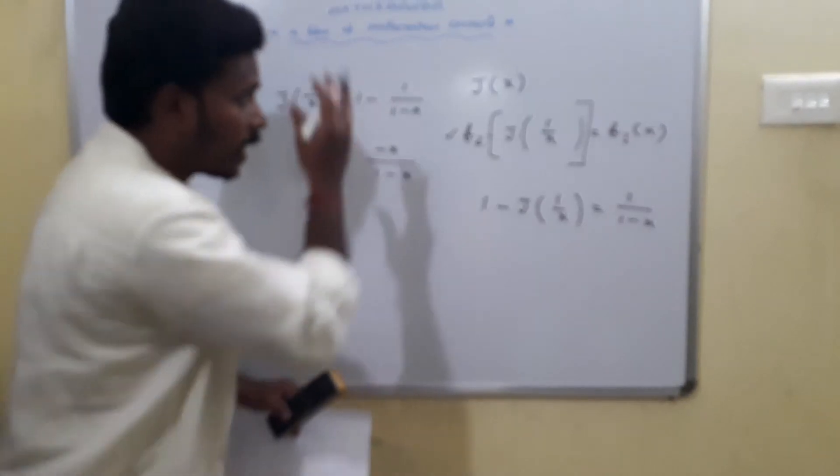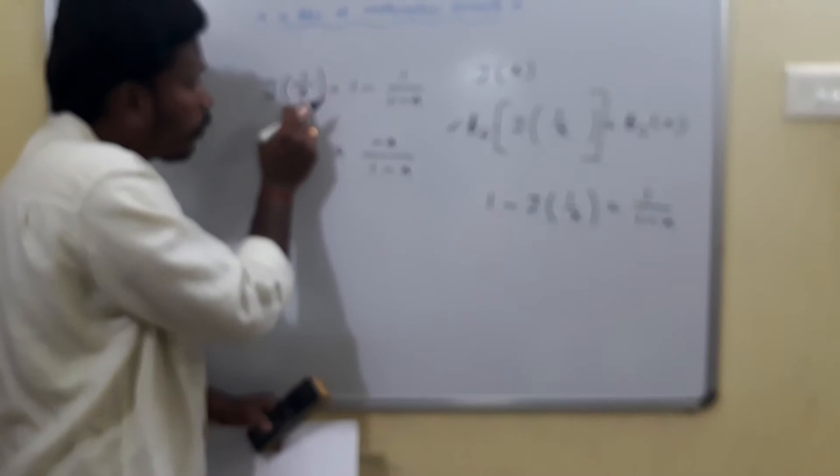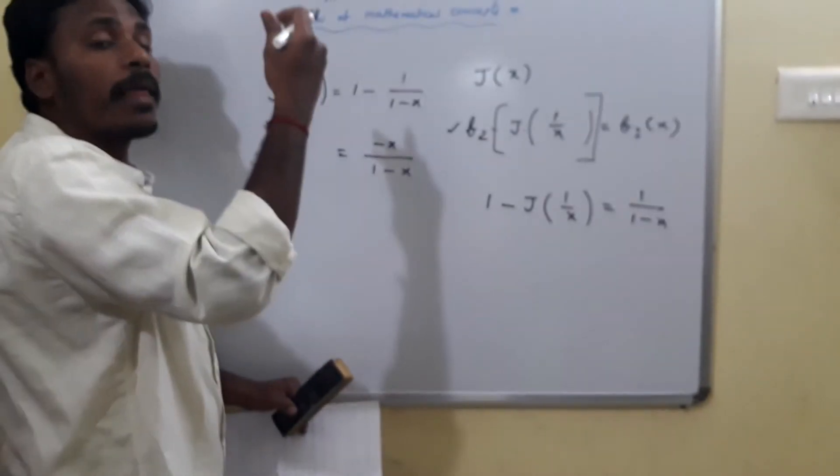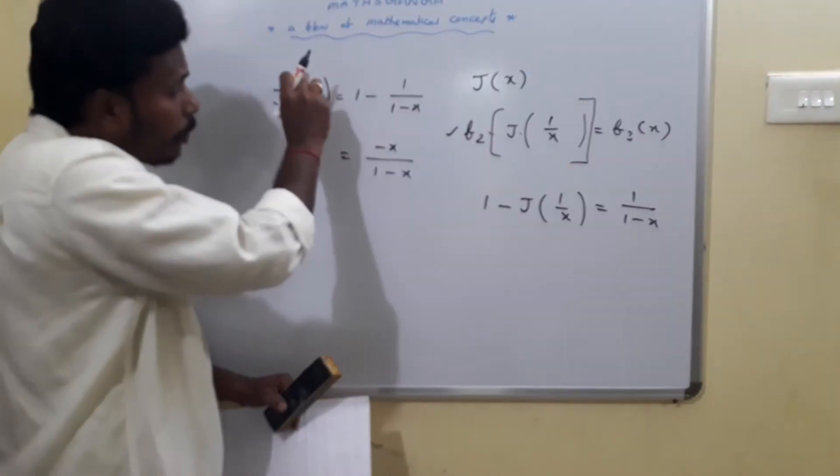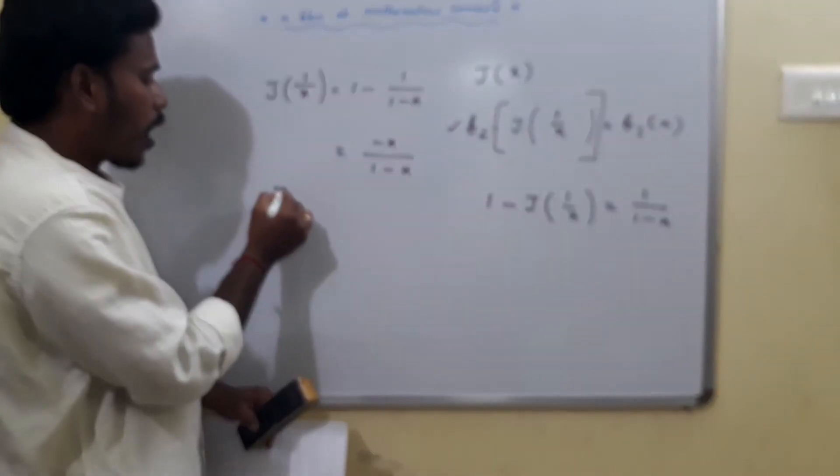But what I need? J of x. I have J of 1 by x, I need J of x. So replace this 1 by x with x. Replacing 1 by x with x is nothing but replacing x with 1 by x.